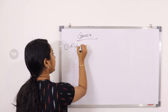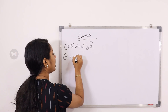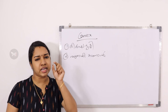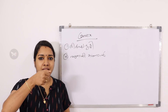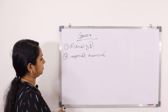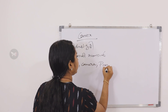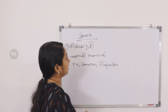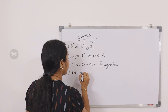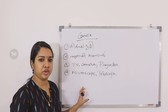First, we call it the convex lens. The convex lens is used to make images. Applications of the convex lens include: TV, camera, projector, microscope, and telescope.